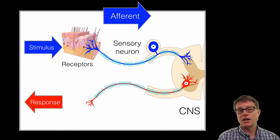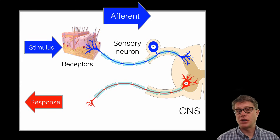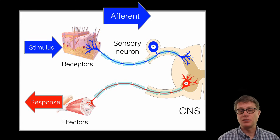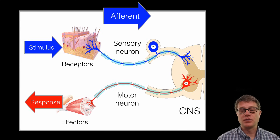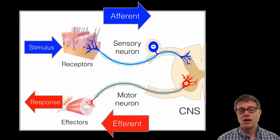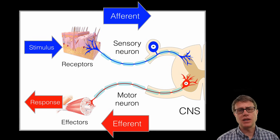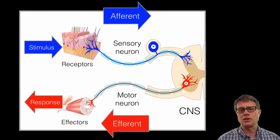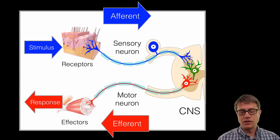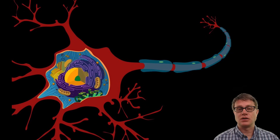And then we have information going back out. We are sending information out to effectors in our body — it could be muscles, it could be glands. And we are going to call those motor neurons — they are moving away from the center. Sometimes we refer to those as afferent neurons as well. Now there should be connections between those neurons — those are not all the neurons we have in our body. And so we also have these connections in the middle, and those are going to be called interneurons.